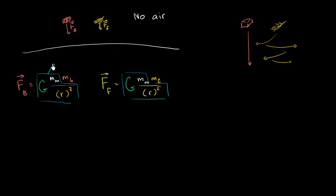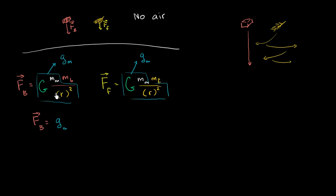Let's replace that shared expression and call it the gravitational field on the moon — g sub m. Multiplying this by any mass gives you the gravitational force acting downward on that object on the moon. So the force on the brick equals g sub m times the mass of the brick, and the force on the feather equals g sub m times the mass of the feather.